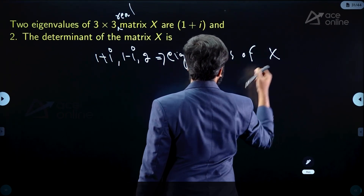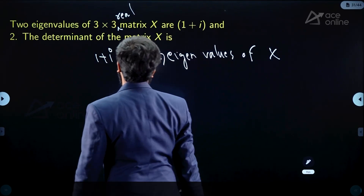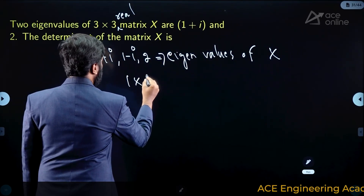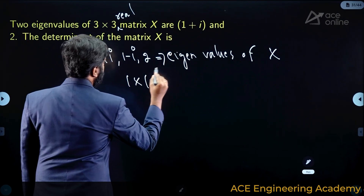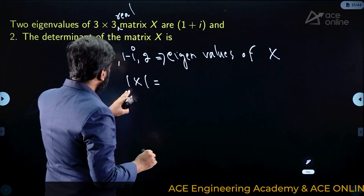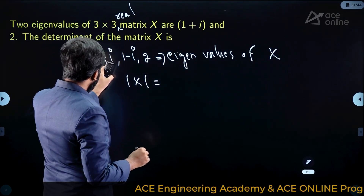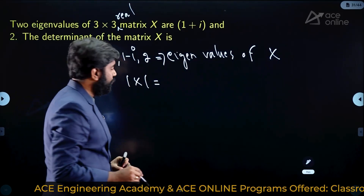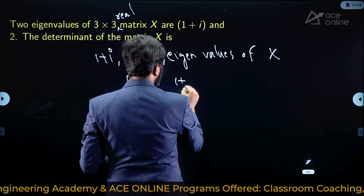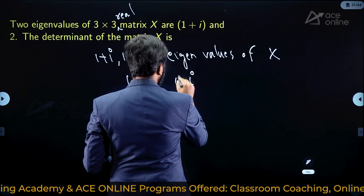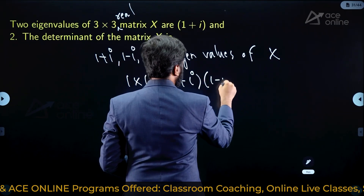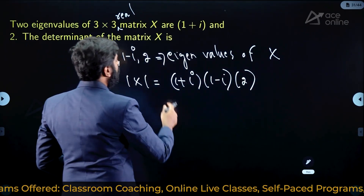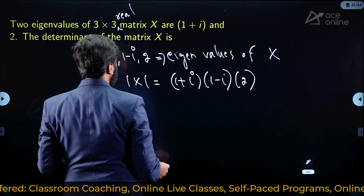The determinant of X equals the product of the eigenvalues. So the product is (1+i)(1-i)(2).